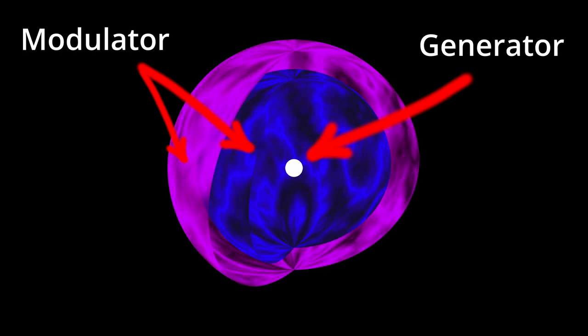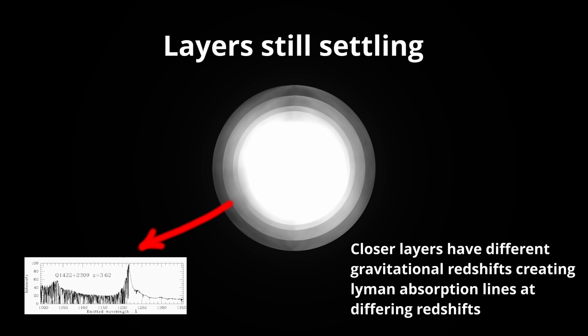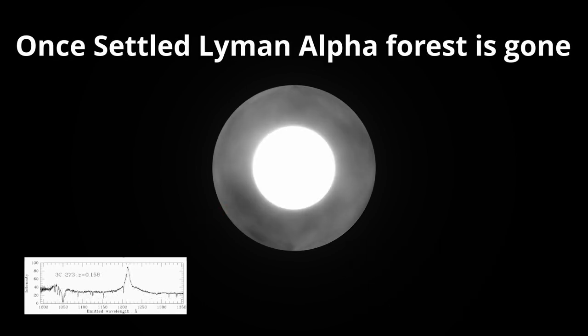The idea of there being a series of strata surrounding the central object and that it is the settling of these that create the Lyman-alpha forest is a very interesting concept that bears consideration for other theories that rely on intrinsic redshift.